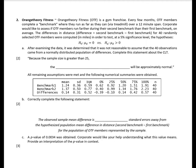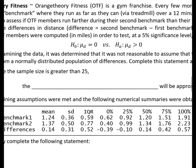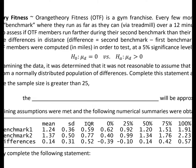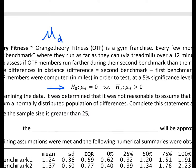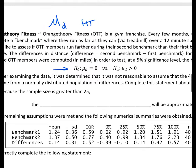Okay, let's go through problem two. Orange Theory Fitness, OTF, is a gym franchise. Every few months, OTF members complete a benchmark where they run as far as they can via treadmill over a 12-minute span. Corporate would like to assess if OTF members run farther during their second benchmark than their first benchmark on average. The difference in distance is second benchmark minus first benchmark. For 40 randomly selected OTF members, differences were computed in miles to test at a 5% significance level the hypothesis mu of D equals zero versus mu of D greater than zero. When we read through the background, we can see that we have a paired data scenario. Our parameter of interest is mu of D, and we know we'll be running a hypothesis test.